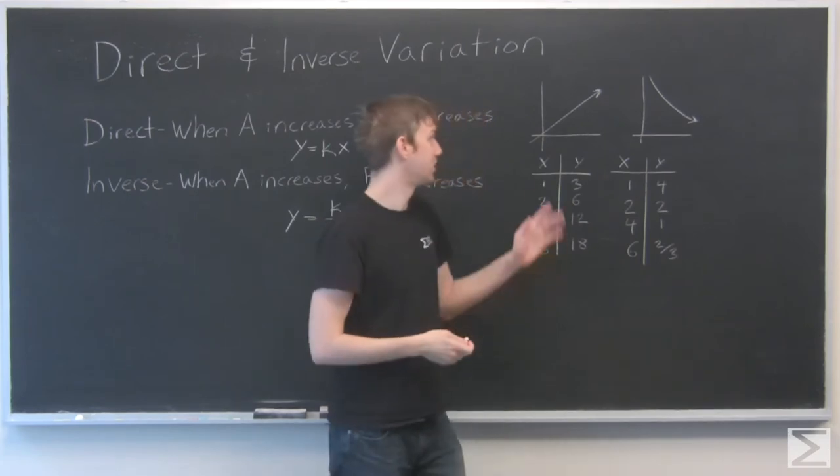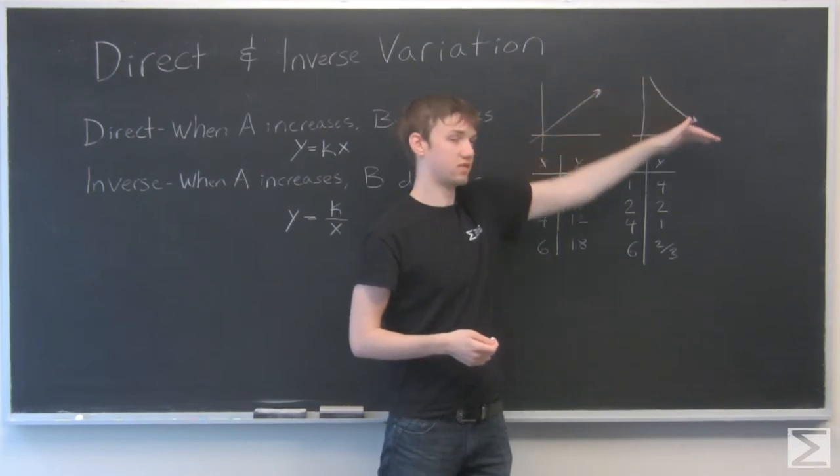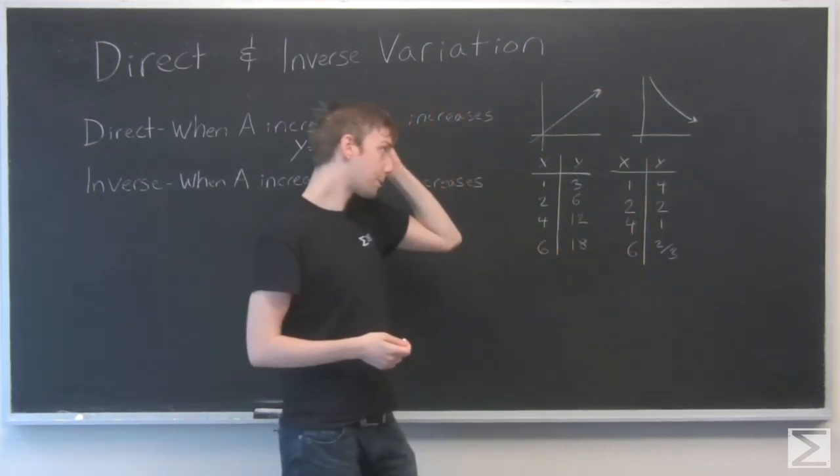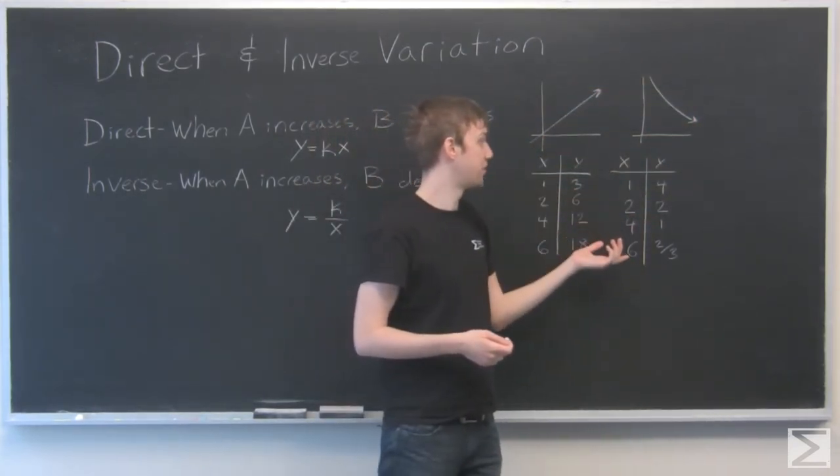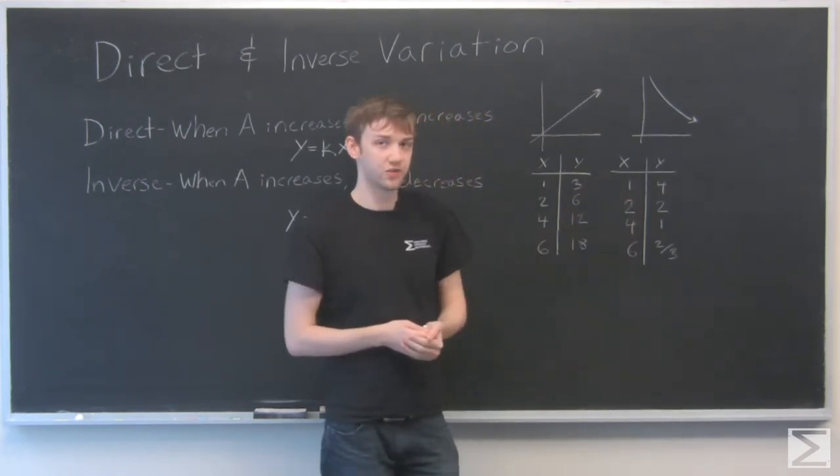So we'll take a look at what this means. This is inverse variation. See the line is going down. It's kind of a slope. And if you have a table like that, you can see that numbers of X are clearly getting larger, while your numbers of Y are clearly getting smaller.